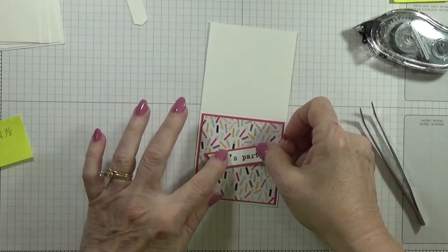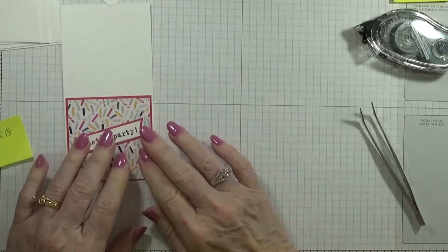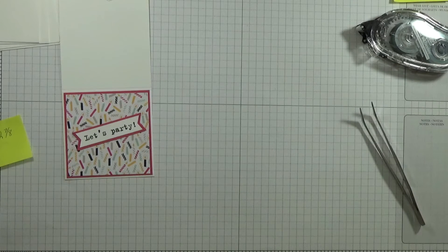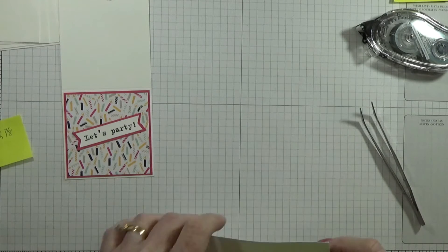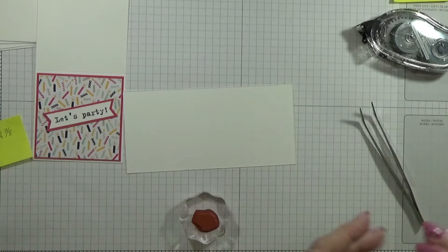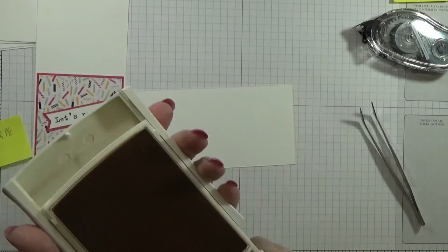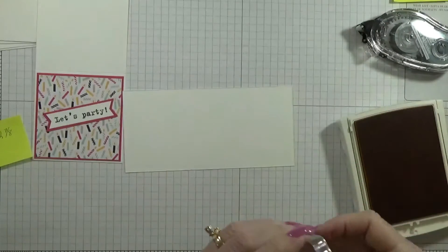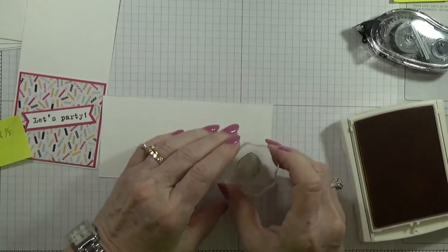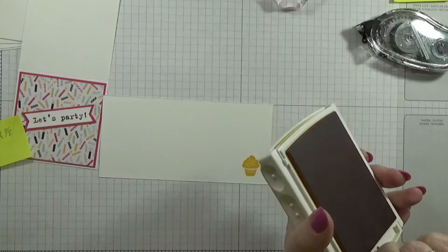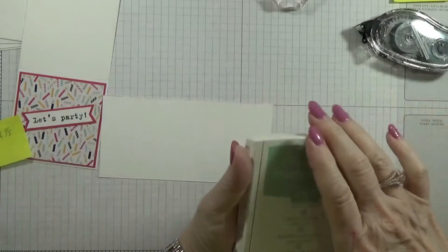Then I'm going to take, oops I didn't get any Whisper White out, hang on just a second. This will do. Just a piece of Whisper White, and I wanted to do the cupcake in the Crushed Curry. Put this down here and stamp that down. And then I'm going to do the little balloon in the Mint Macaron.